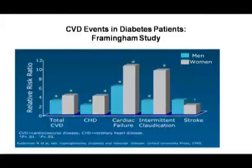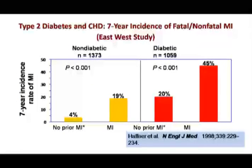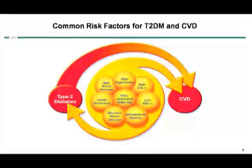65% of people with diabetes die from some form of heart disease or stroke. Cardiovascular events in diabetic patients — as shown in the Framingham studies — both men and women with diabetes have greater cardiovascular risk. This is the famous Haffner's equation, where a non-diabetic with cardiovascular disease is equivalent in risk to a diabetic without any cardiovascular event. Both type 2 diabetes and heart disease share common risk factors: high blood pressure, high triglycerides, high lipids, intra-abdominal adiposity, insulin resistance, and so on. Probably this is a mixed disease rather than purely type 2 diabetes or cardiovascular disease.